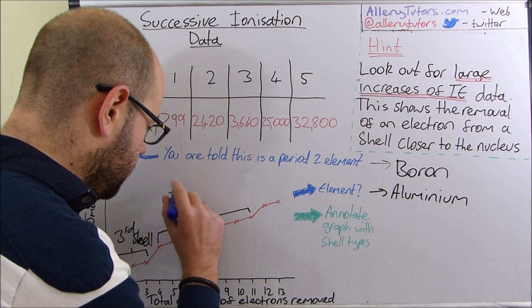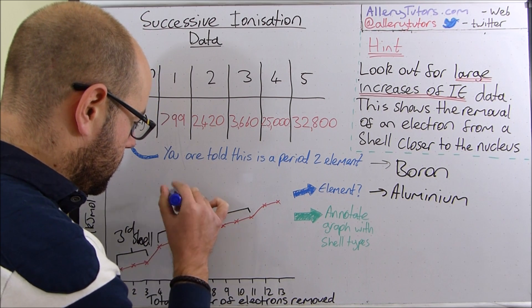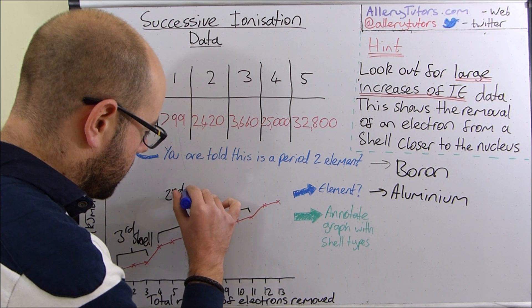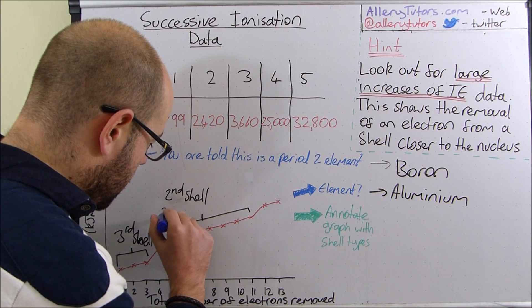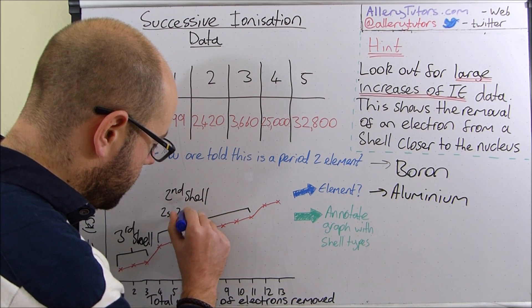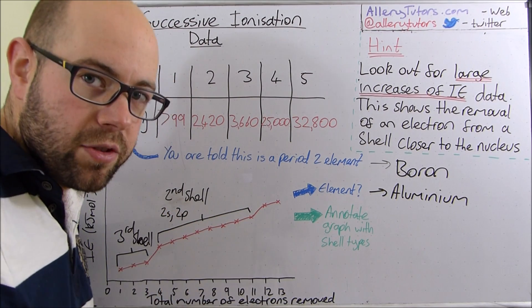So this is the second shell. Let's just put that on there. There you go. Second shell. Or effectively, this is going to be the 2S and 2P sub-shells. These eight electrons make up.